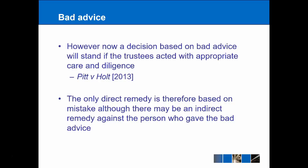This creates a potential problem for beneficiaries who are trying to find a remedy. There is perhaps an indirect remedy against the person who gave the advice — something like professional negligence against the accountant in the example described — or there may be a direct remedy based on mistake, but that's harder to prove. On one hand, Pitt v Holt upheld trustees' discretion, but it has taken away some remedies available to beneficiaries.